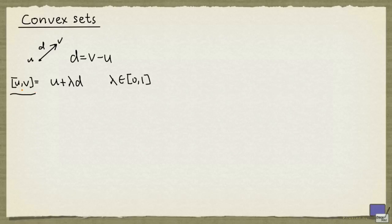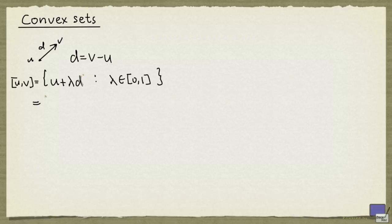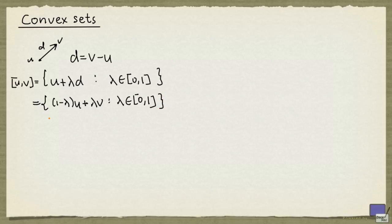So the notation is this: open square bracket U comma V close square bracket, and it's going to be the set of all points U plus lambda times D, where lambda is between 0 and 1 inclusive. And if we substitute V minus U for D, we can write this as 1 minus lambda times U plus lambda times V, such that lambda is at least 0 and at most 1. And so this set is the line segment between U and V.